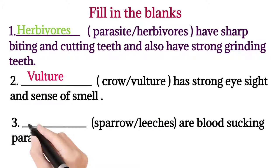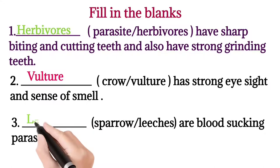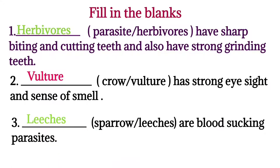Scavengers have strong eyesight and sense of smell to locate a dead animal. Question three: sparrow or leeches are blood-sucking parasites? Correct answer: leeches. Leeches have suckers in their mouth to suck blood from their host body.